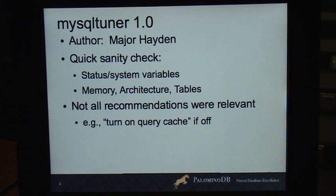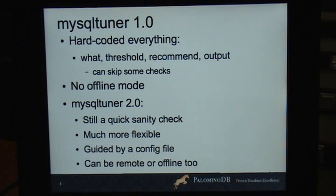So everything was hard-coded. What to check, the thresholds even. If you had a threshold, it would give a recommendation if you hit a certain threshold. So if the tables were more than X fragmented, you couldn't change that. I mean, it was in a Perl script, so you could change it, but it wasn't in an easy way. And what the recommendation was, like turn off query cache, was hard-coded, and the output was hard-coded. There were some parameters so you could skip some of the checks, but not all of it.